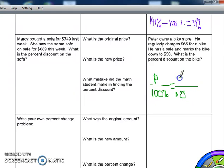He has a sale and marks the bike down to $50. So the new price for the bike is $50. So what is the percent discount? So we're going to find the same way. Find the scale factor, multiply by the scale factor. So I'm going this way.